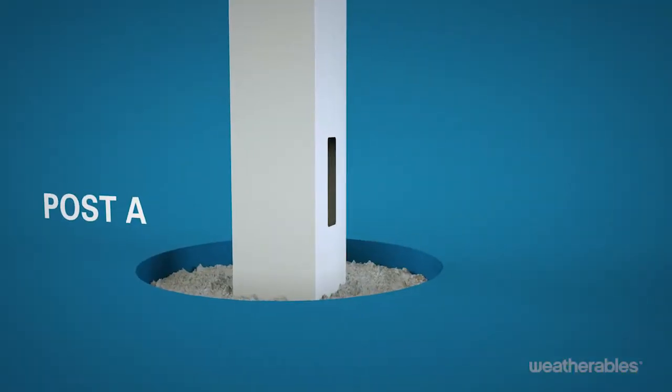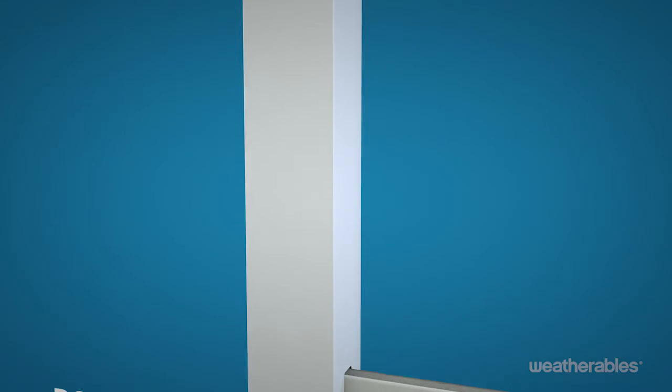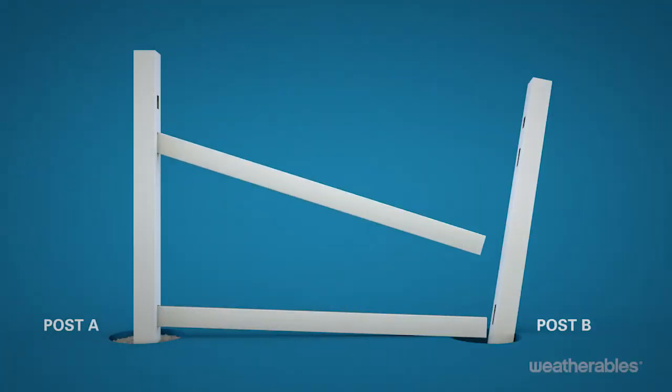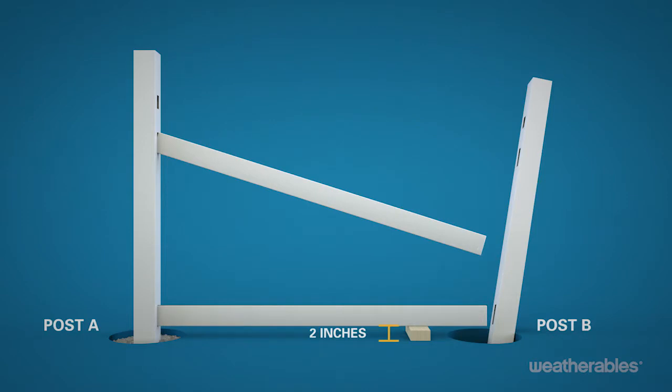Next, slide the bottom rail, the one with the aluminum insert, and mid rail into the routed holes in post A. Now it's time to insert the pickets. We recommend resting the bottom rail on a 2 by 4 to keep it a level 2 inches off the ground to make it easier to insert the pickets.